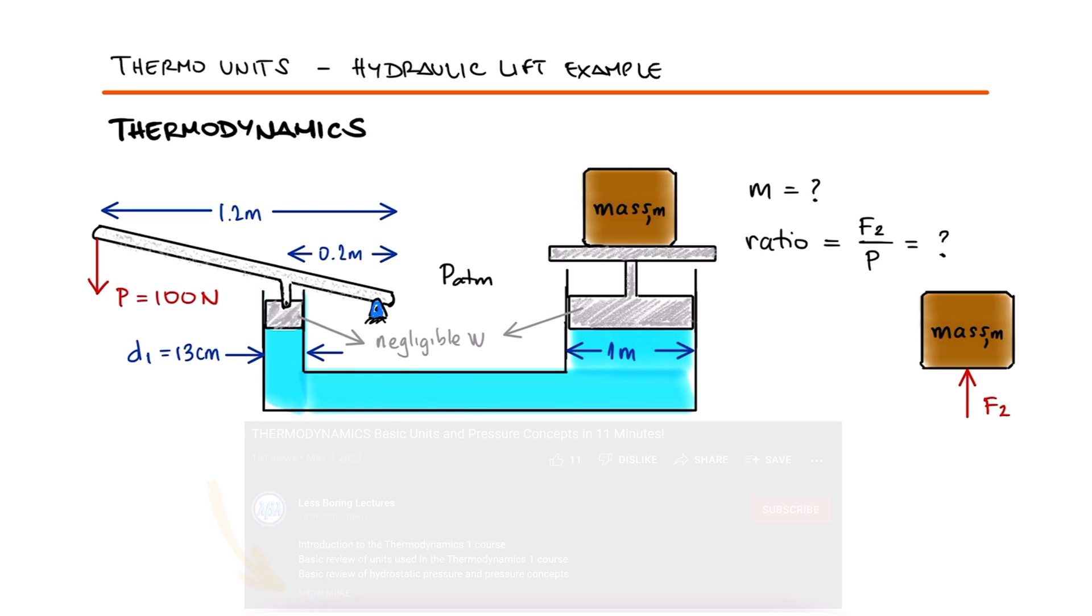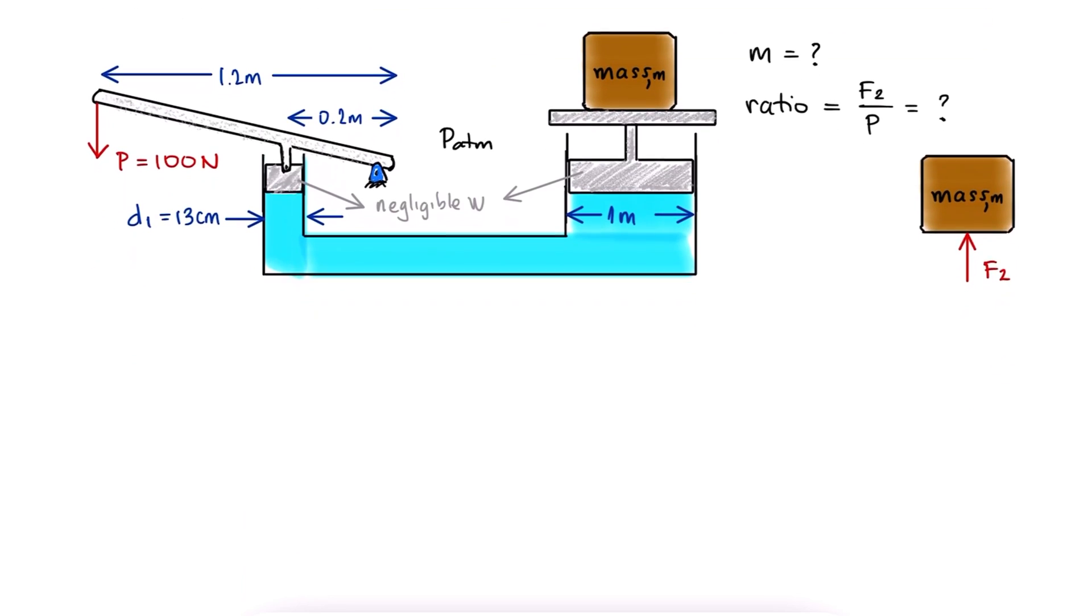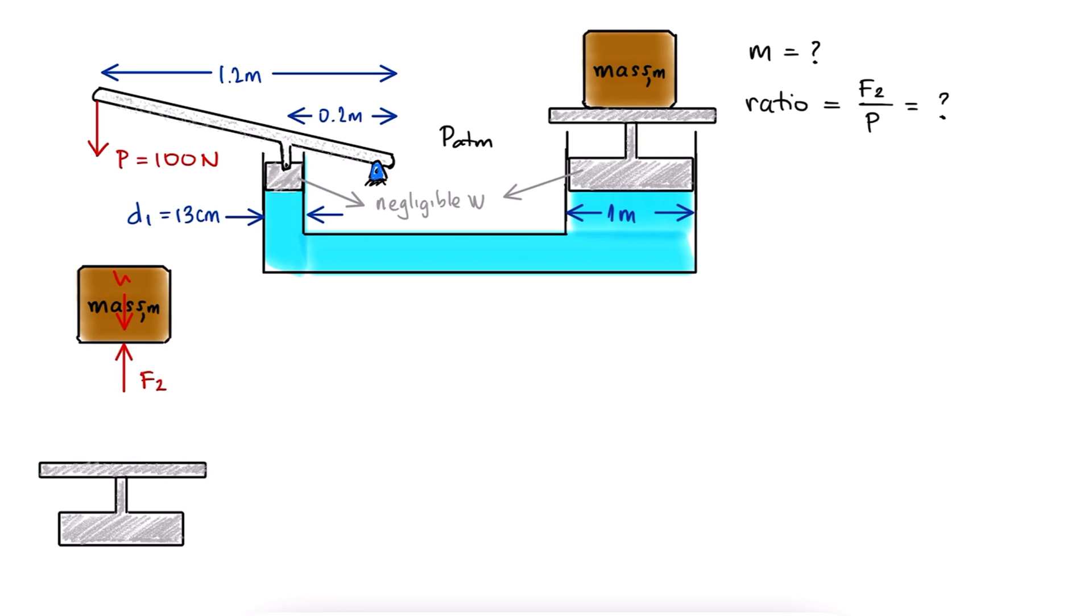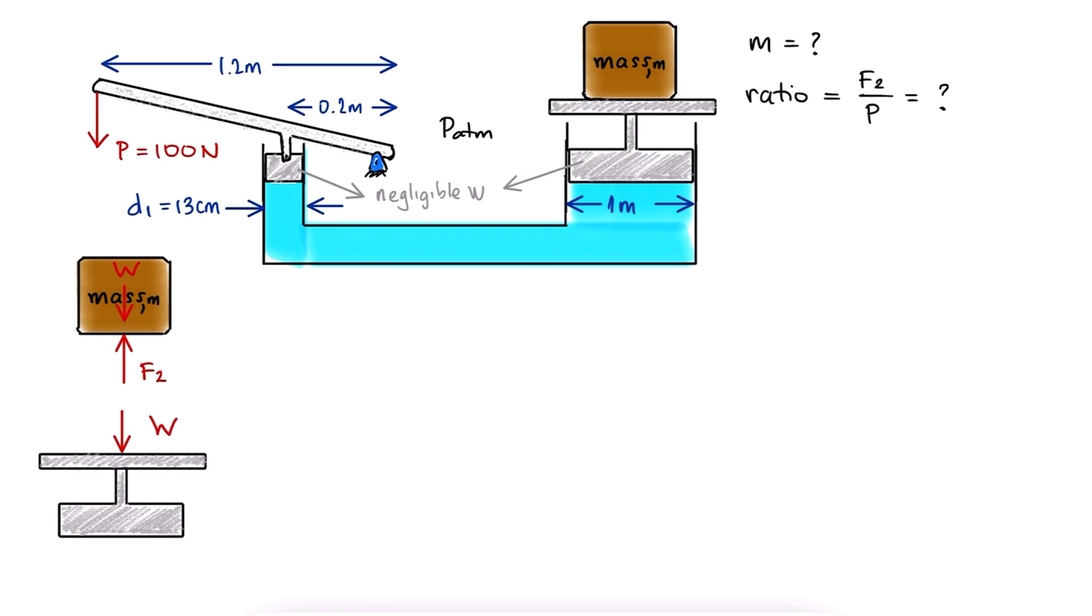Since what we want to find is the weight on the larger piston that we can lift when applying a 100 N force on the lever, let's begin with a free body diagram of that piston. We have the weight of the mass going down and the force caused by the pressure going up.